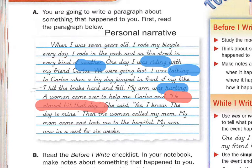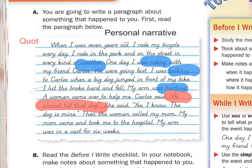Also notice the dialogue: 'He almost hit that dog,' Carlos said. You can see right here the quotation marks. Those are called quotation marks. That's one thing that's nice to do in a personal narrative — to have words that you say and that someone is saying to you, a conversation. You can show that you're having a conversation by using quotation marks, which are these guys.